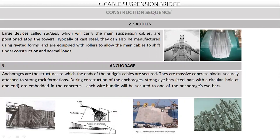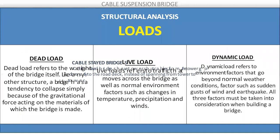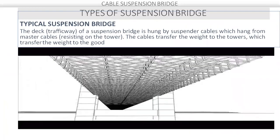You can see here the suspension cables are anchored by the concrete block. The steel I-bar is embedded in the concrete for this anchorage. Next we see cable suspension spinning.